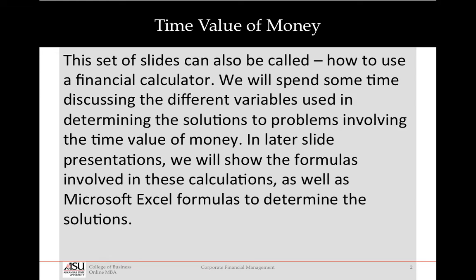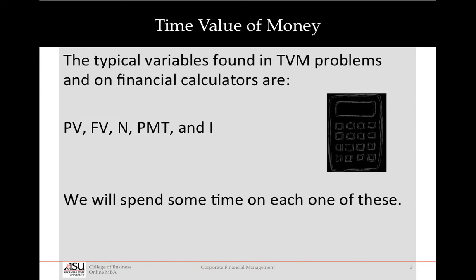So what we're going to talk about are the different things involved in doing time value of money problems. The way you know that you have a financial calculator, or the different variables found in a time value of money problem, is these five: PV, FV, N, PMT, and I. Sometimes the I has a percentage sign, sometimes it's N/Y, but those are basically the five, and they're usually all on the same row on your calculator.